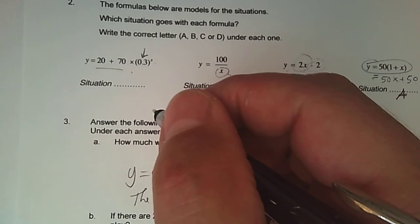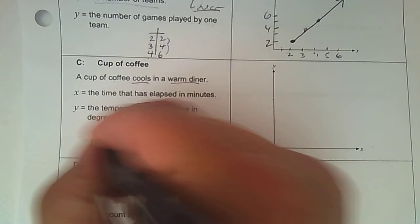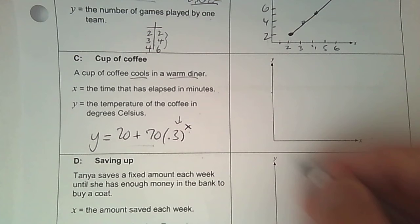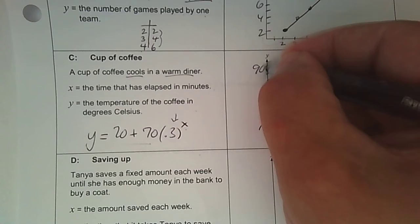That's part C. So the equation that I would be graphing then is Y equals 20 plus 70 times 0.3 to the X. So again, because the base is less than one, it's decreasing. When I plug in zero, the answer is 90, and then it decreases from there. So I'm going to go 10, 20, 30, 40, 50, 60, 70, 80, 90. That's where I'm starting.